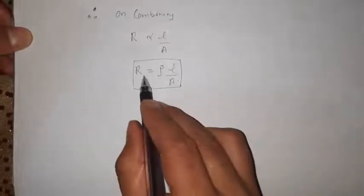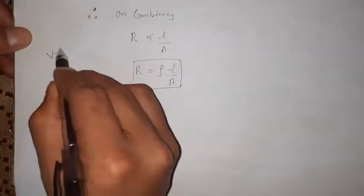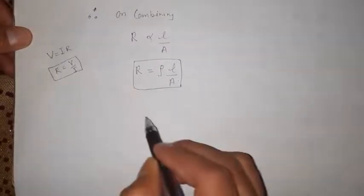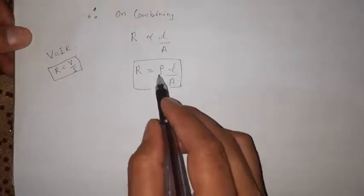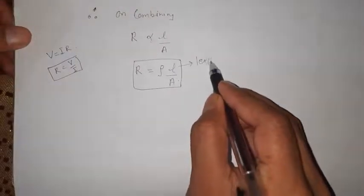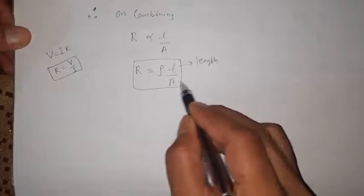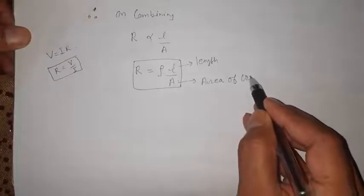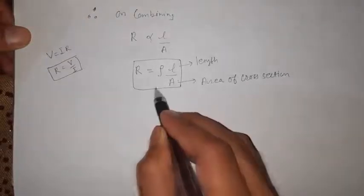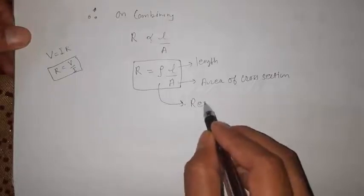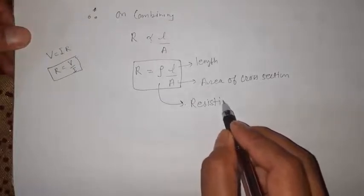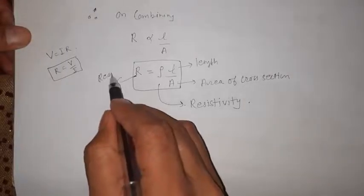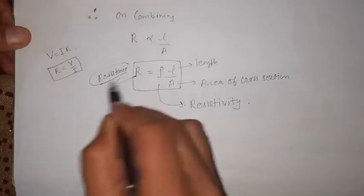Removing the proportionality sign and introducing a constant, we get the formula R = ρL/A, where L is the length, A is the area of cross-section, and ρ (rho) is the constant of proportionality, called resistivity. This is another formula for resistance, in addition to R = V/I.